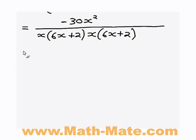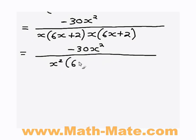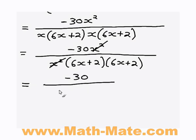So if I rewrite, I get negative 30x squared. Now on the bottom, I'm going to group together the x factors. So out the front, I'm going to rewrite x squared and then 6x plus 2 times 6x plus 2. So I've just changed the order. It's exactly the same thing. But now I've got an x squared on the top, which I can cancel out with the x squared on the bottom. So what I'm left with is just negative 30 on the top. And I'm going to rewrite it in squared form. So 6x plus 2, because there's two of them multiplied by each other, it's 6x plus 2 all squared. And that's your derivative.